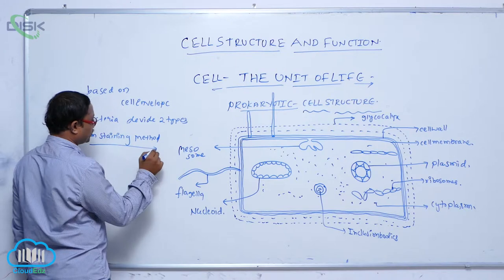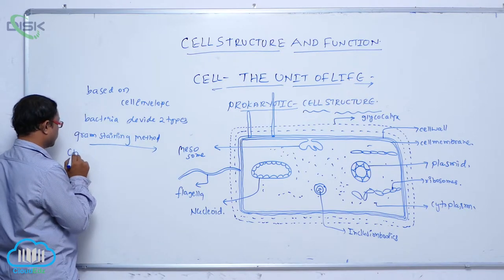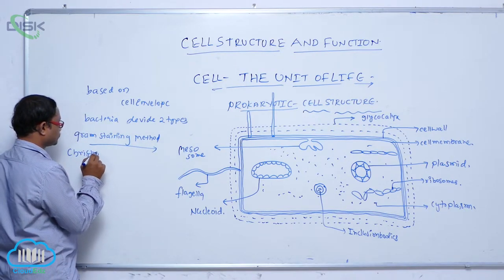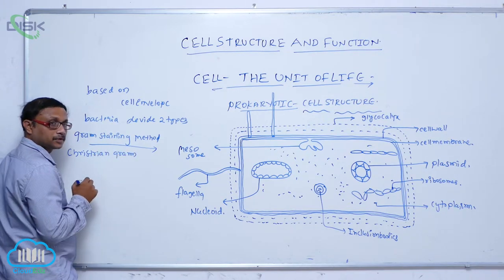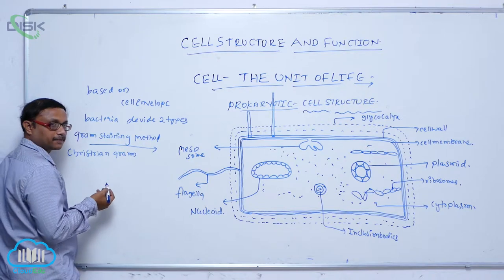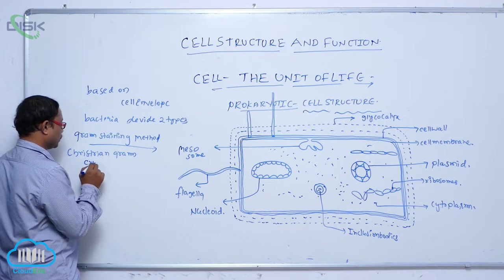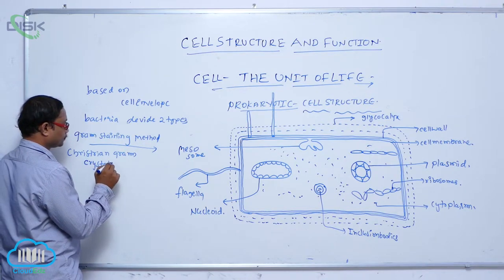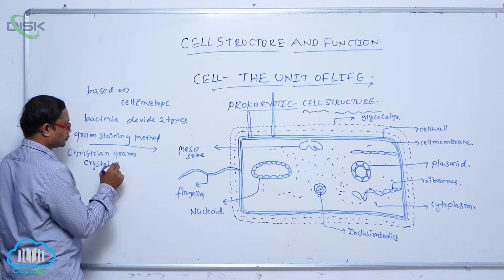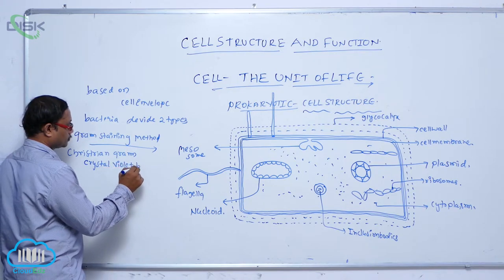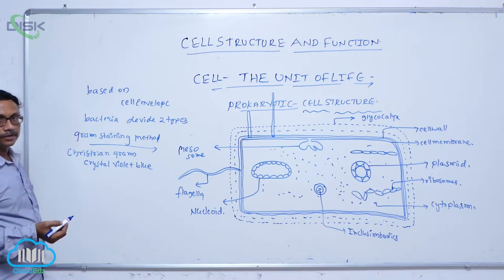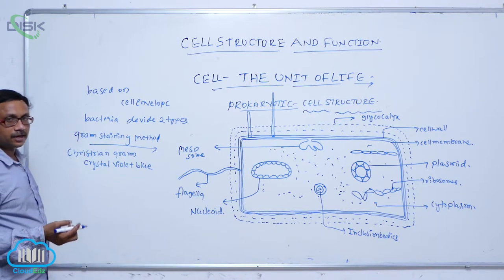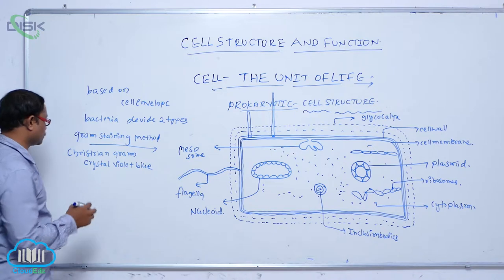The gram staining method was explained by Christian Gram, a scientist. He used crystal violet blue for the staining purpose, and he concluded the classification into gram positive and gram negative.